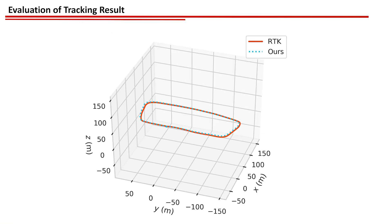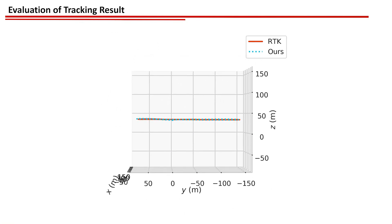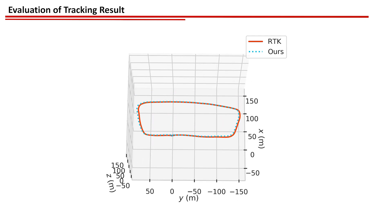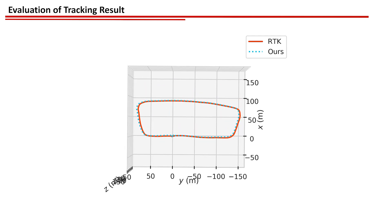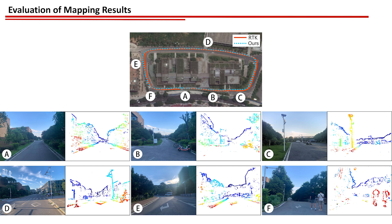Compared to ESVO, our new pipeline significantly reduces the camera pose tracking error by 40% to 80% in terms of absolute trajectory error. Furthermore, the mapping efficiency is improved by a factor of five.